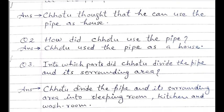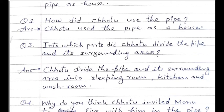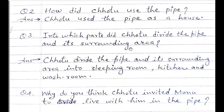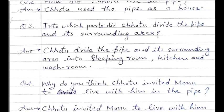Question number three: Into which parts did Chotu divide the pipe and its surrounding area? उसने कितने क्षेत्रों में छोटू ने अपने pipe को और उसके आसपास के क्षेत्र को विभाजित किया? Answer: Chotu divided the pipe and its surrounding area into sleeping room, kitchen, and washroom. उसने pipe को sleeping room — शयनकक्ष, kitchen — रसोई, और washroom में divide किया.